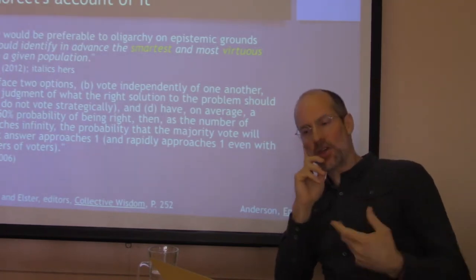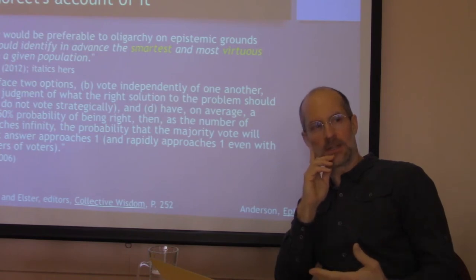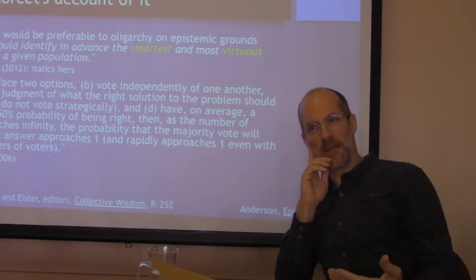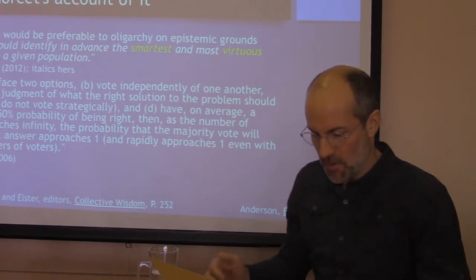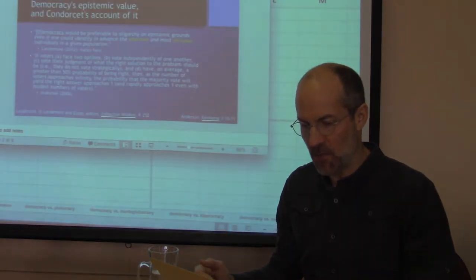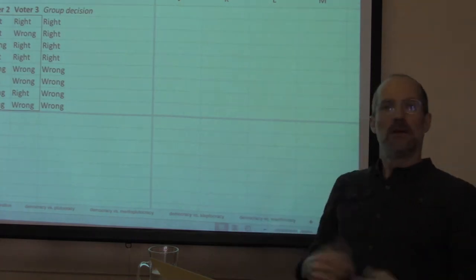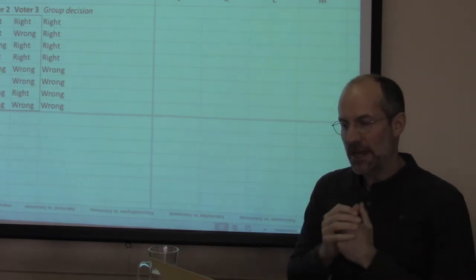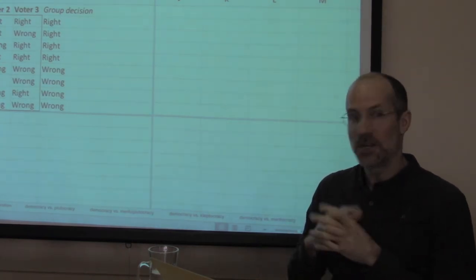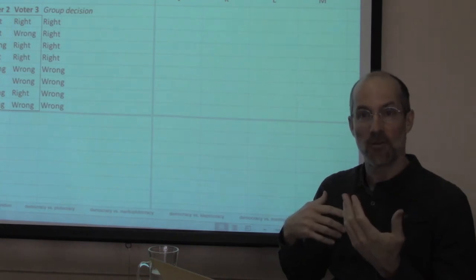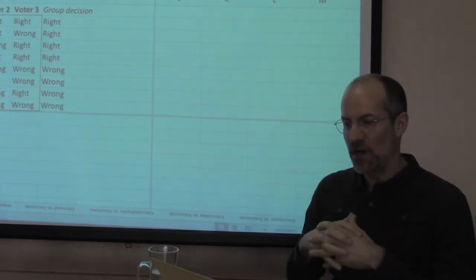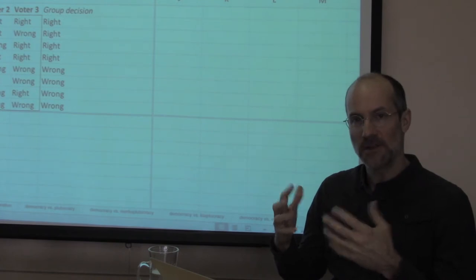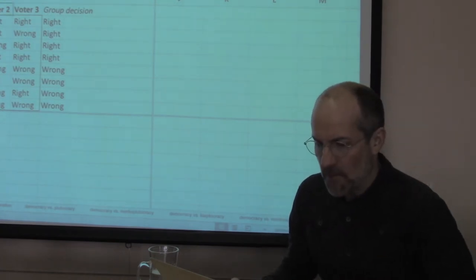I can illustrate that with a very simple example. So let's imagine a very simple situation in which there are three individuals, and they have a choice between two options, and they can either get it right or get it wrong. In that situation, there are only eight possibilities, as I illustrate here.